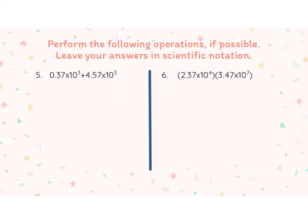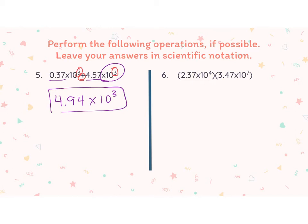Now let's talk about doing some operations. Looking at number five, the first thing I notice is that I'm adding, and the second thing is that my exponents are the same — that's super helpful. So all I need to do is add the two coefficients: 0.37 and 4.57. Using a calculator, 4.57 plus 0.37 gives me 4.94. My power stays the same — it's only when you move your decimal point that your power has to change.